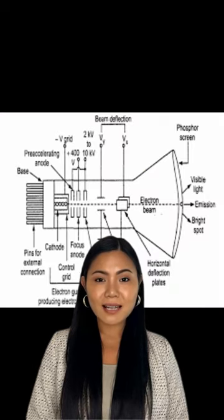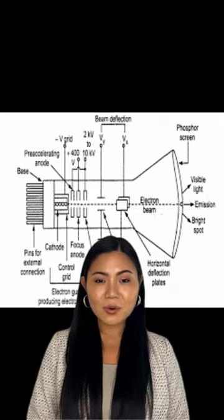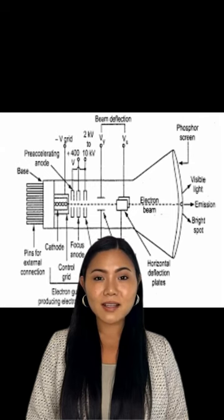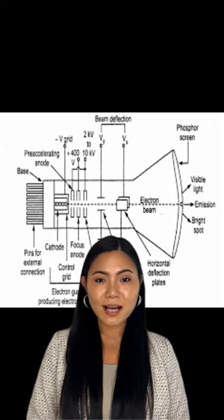Probably the best known application of a cathode ray tube is as the picture tube in a television. Other applications include use in oscilloscopes, radar screens, computer monitors, and flight simulators.